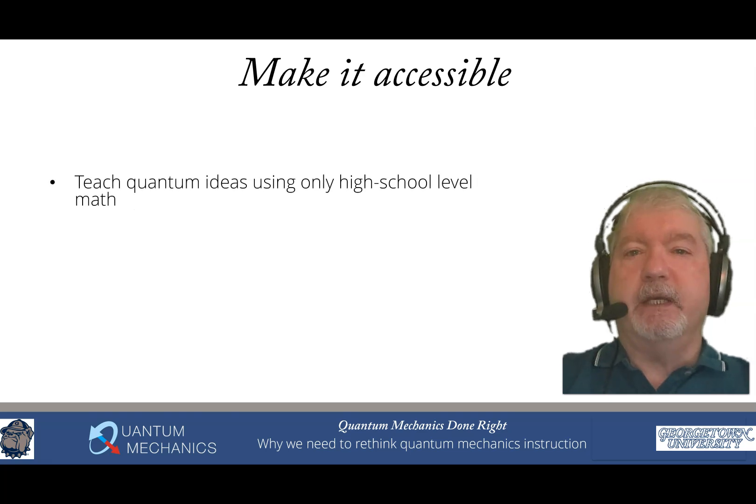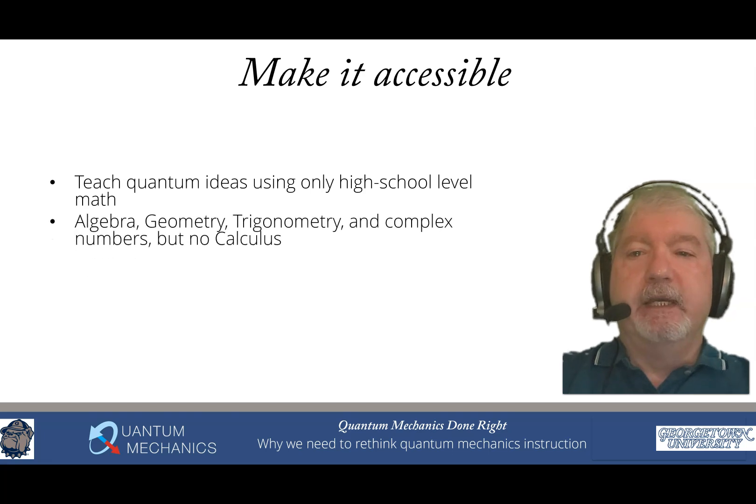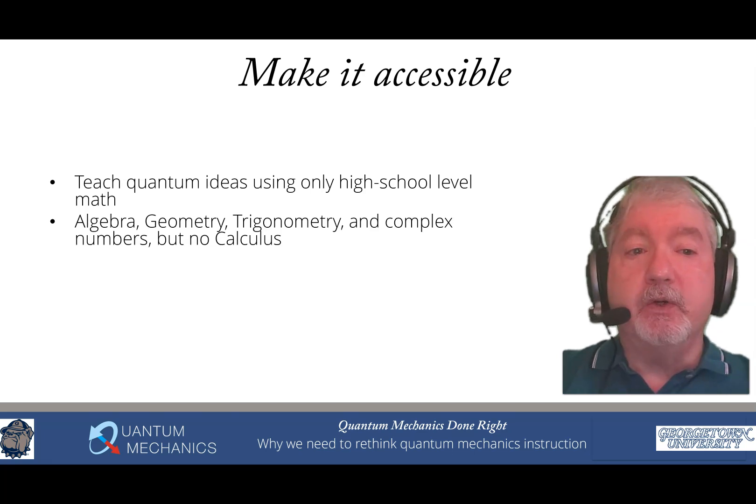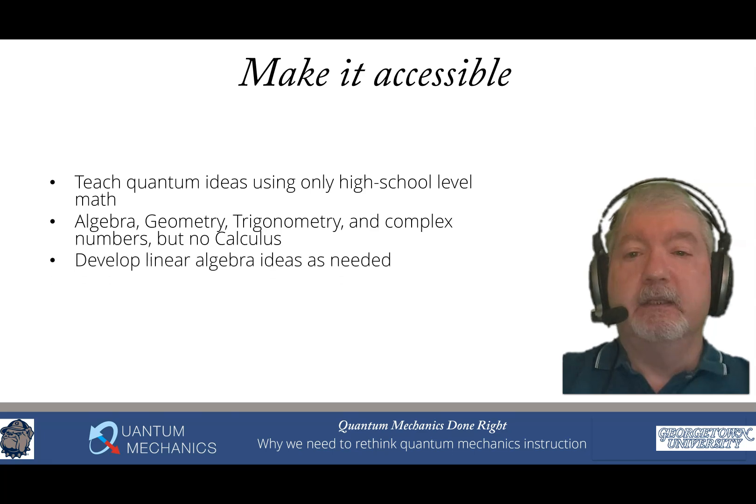Let's go into a little more detail. How do we make it accessible? We teach quantum ideas using only high school level math. This means algebra, geometry, trigonometry, and complex numbers. It requires no calculus. You heard me right. You can learn through graduate level quantum mechanics with no calculus. And no, it doesn't mean that everything is done with matrices and linear algebra. There are some linear algebra ideas that are needed, but those can easily be developed along the way as they're needed. And surprisingly, you'll find there aren't very many that are actually needed.